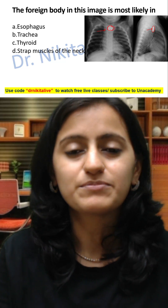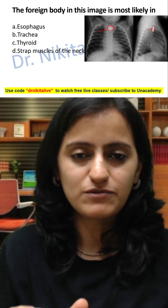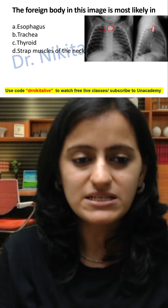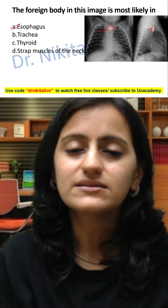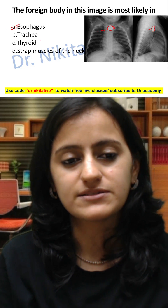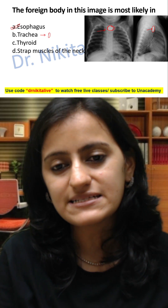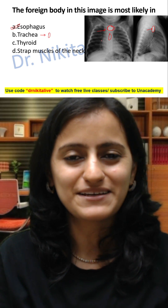Now we can answer this question. The coin here is rounded in the AP view, which means the coin has gone down straight — that is why the answer is the esophagus. In the trachea, the coin would have been slit-like in the AP view.